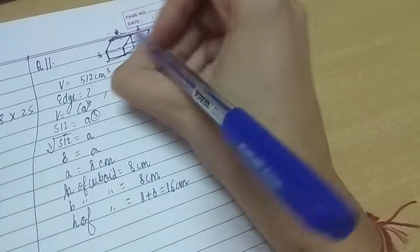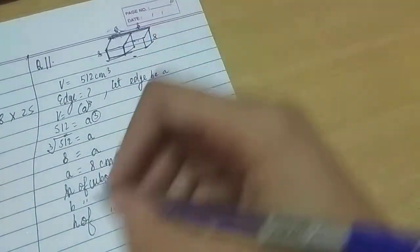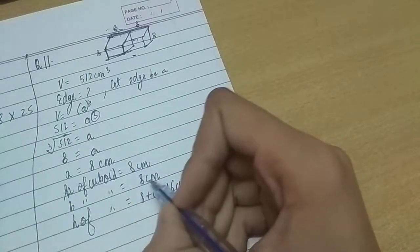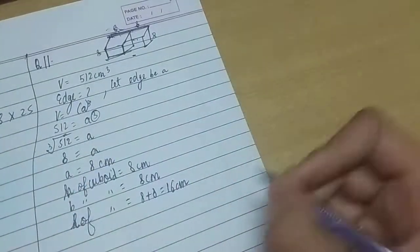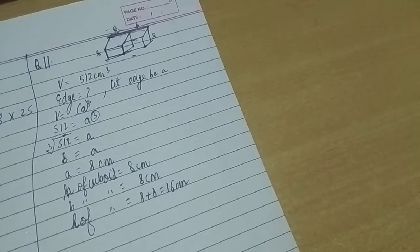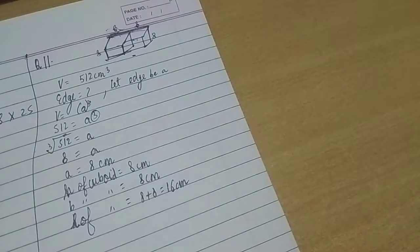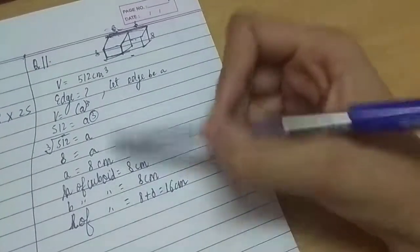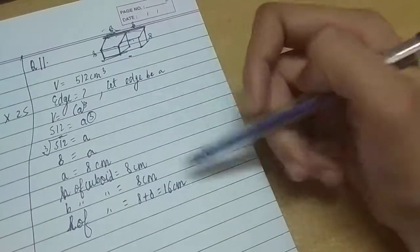Actually, I told you wrong over here. This is the length, right? Not the height. This is the length. So height would be 8, breadth would be 8, length would be 16, right? This is the length. I just considered it as height wrongly. So the length would be 16.